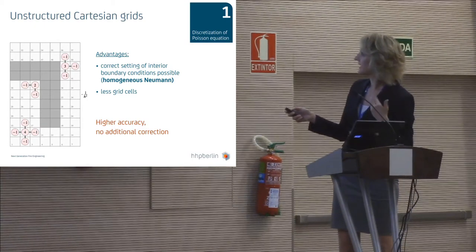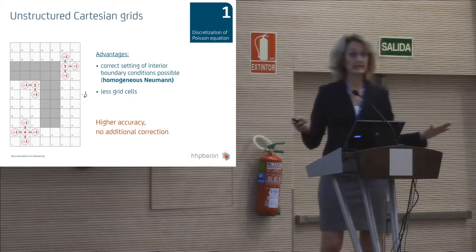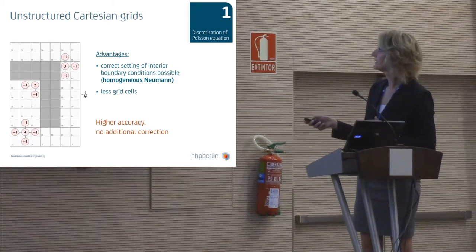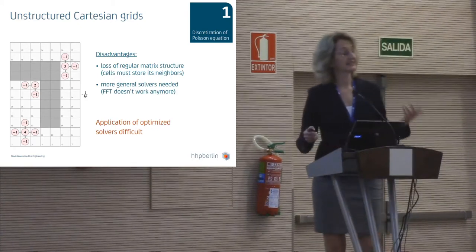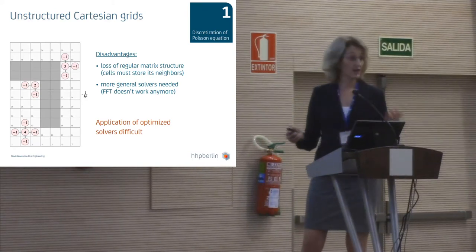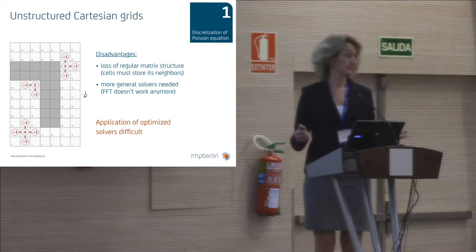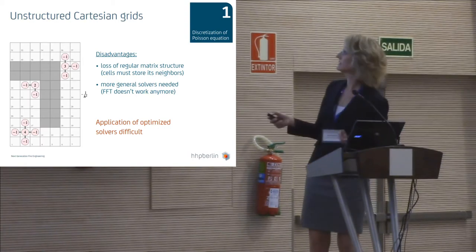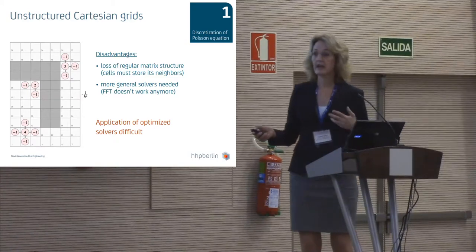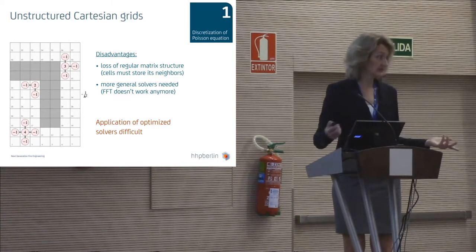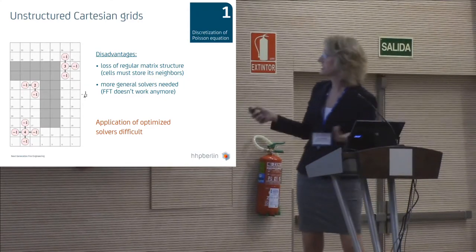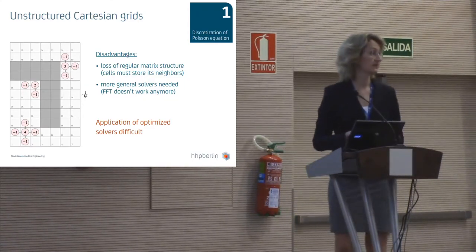which means that the normal velocity components towards the internal solids must be zero. So we can get higher accuracy and we don't need any additional velocity correction anymore. But as in real life, there is no advantage without disadvantage. Now we have lost this beautiful matrix structure, all cells must store their neighbors, and we have to use more general solvers which are not as efficient as the FFT. So it's much more complicated to apply an optimized solver.